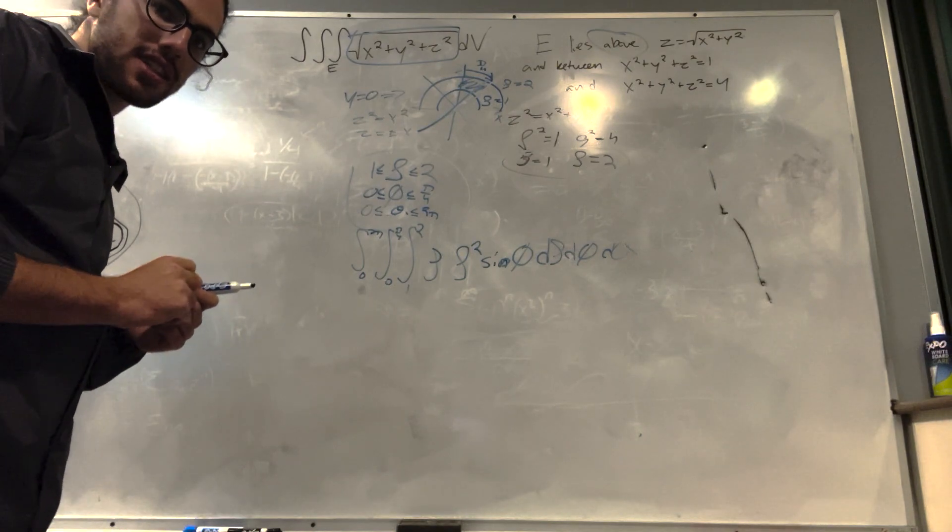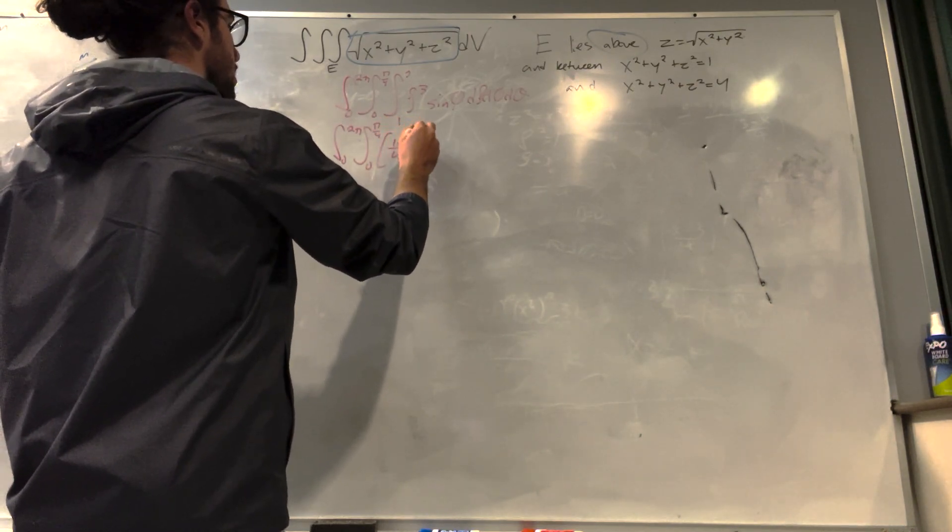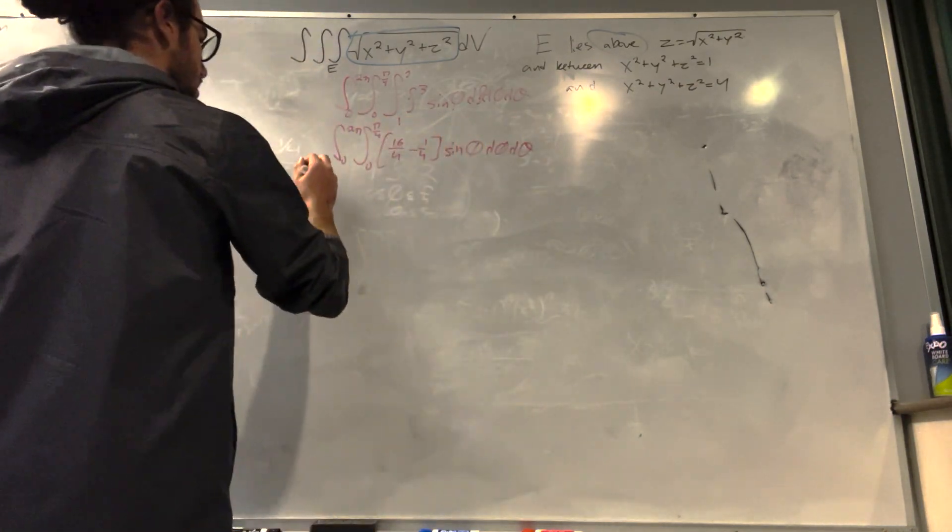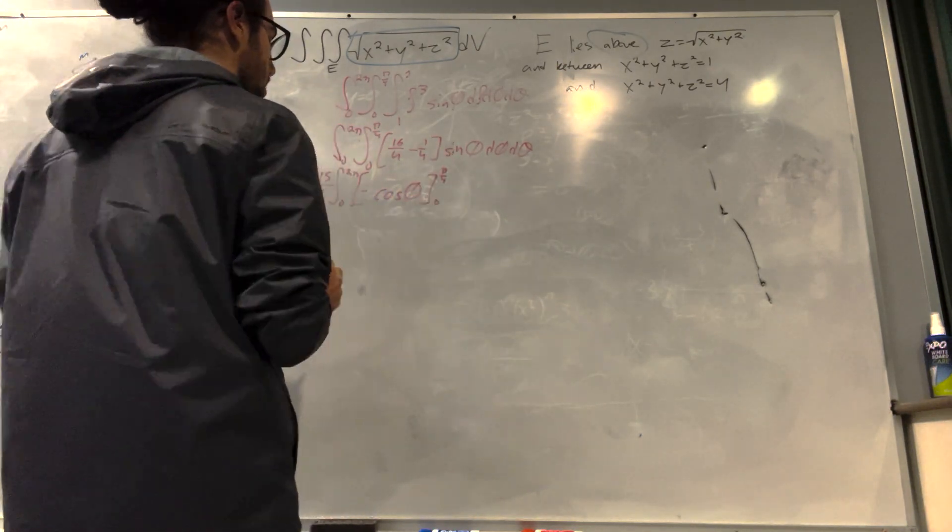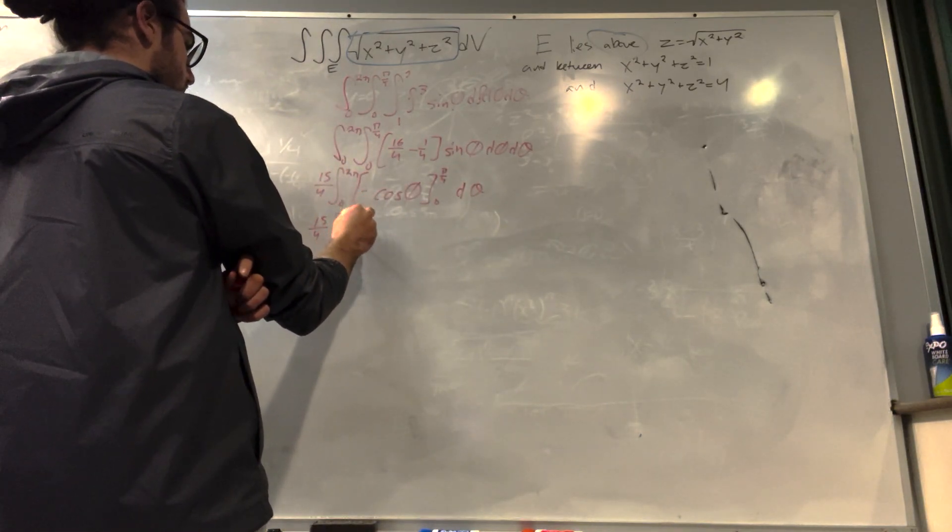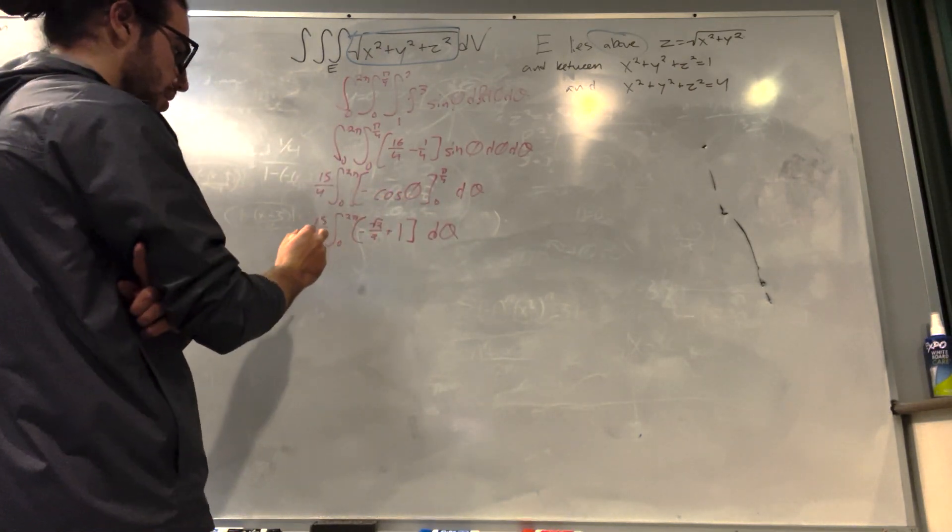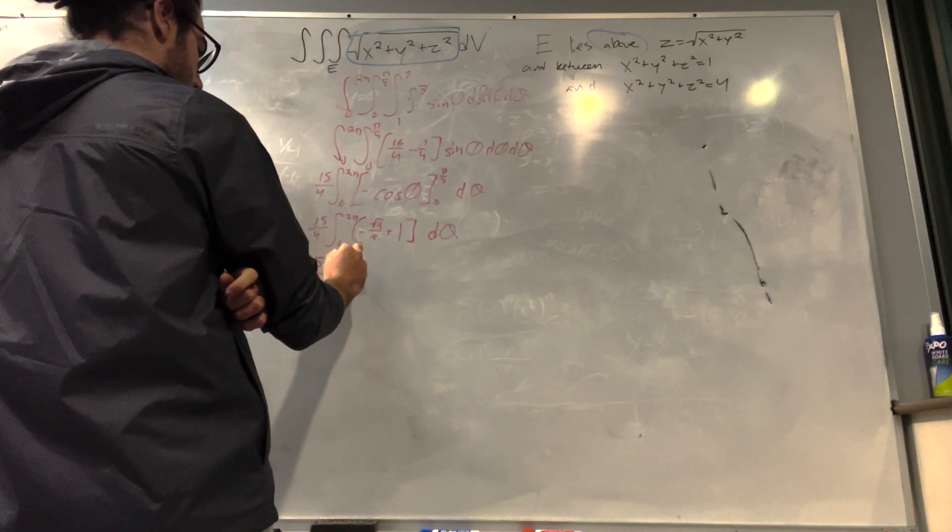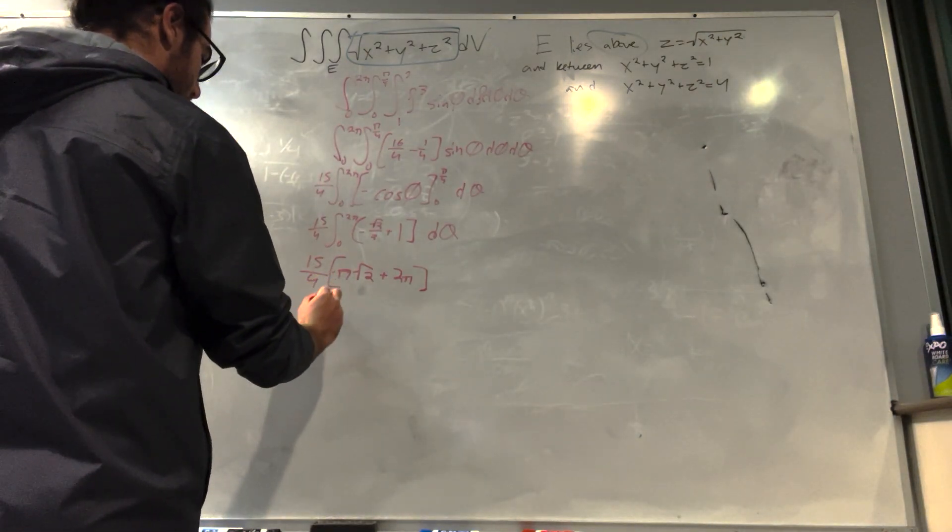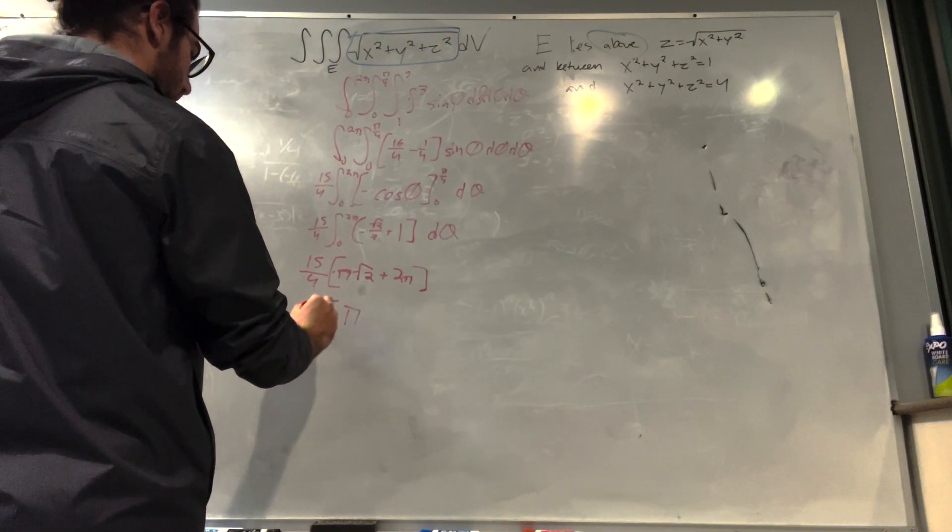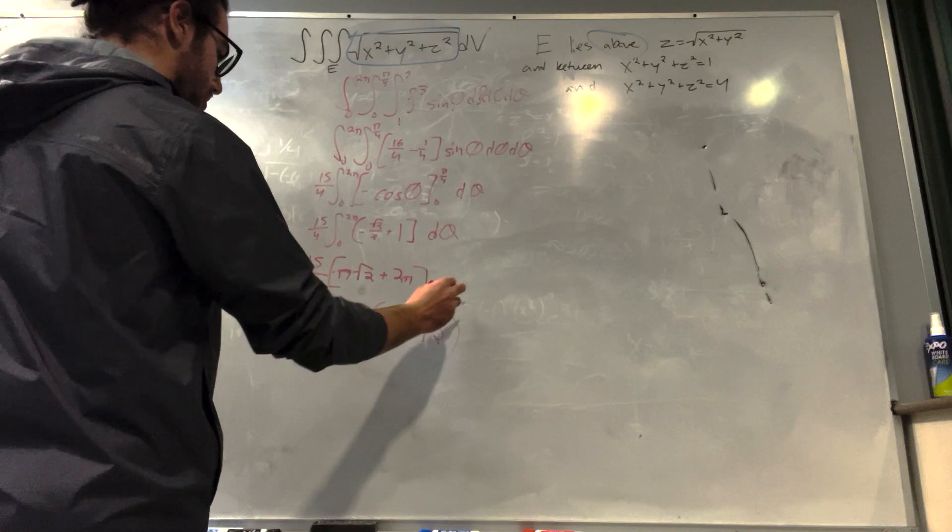So I'm going to solve this really quick for you guys. I'm going to show you how it's done. And this becomes 15 pi over 4, 2 minus square root of 2, which is our final answer.